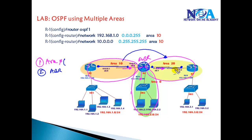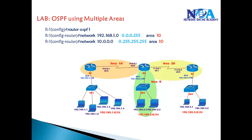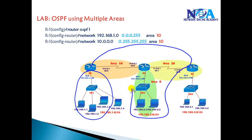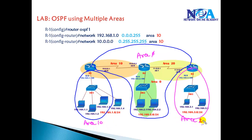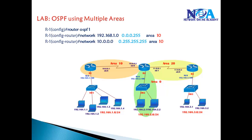These three things we need to keep in mind when designing networks in multiple areas. You can also design an alternative topology — making one side area 0, and the other routers in area 10 and area 20 with separate Area Border Routers. I recommend you try that lab as well, but right now I'm going to follow the topology on screen.